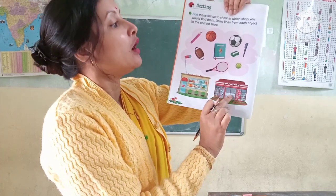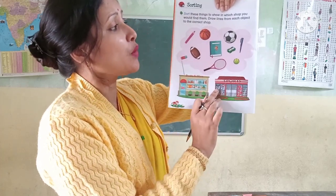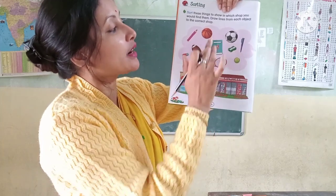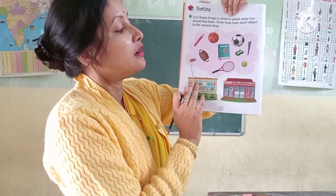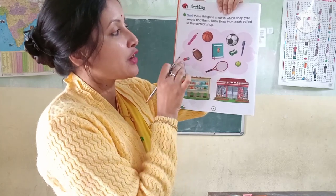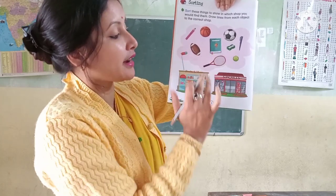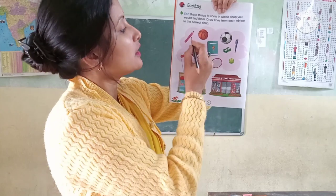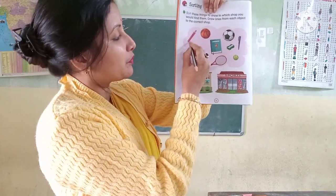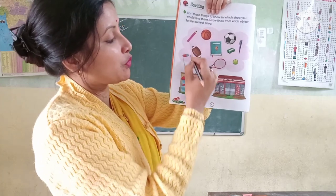So you have to put this thing to the correct shop by drawing one line. With the help of one line you have to put this thing to the correct shop. First one is pencil — draw one line from pencil to the book and board shop.